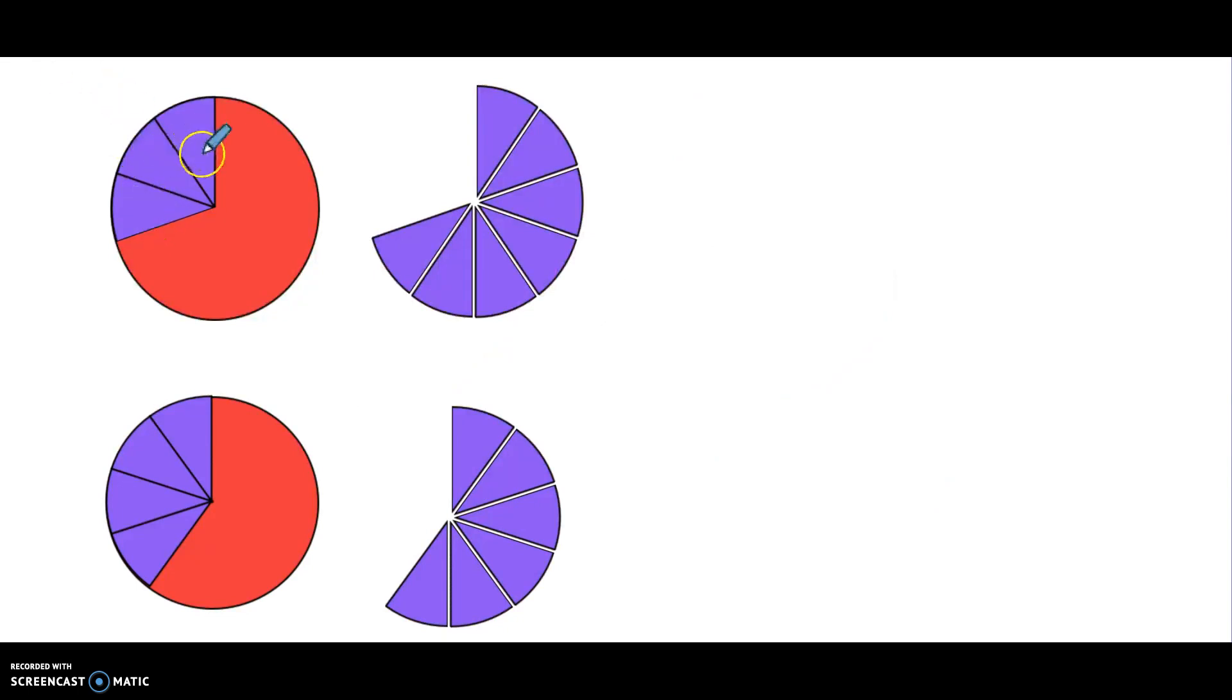So how much of my one whole is covered here? I know that I have three out of my ten equal parts covering my one whole, and this fraction reads three-tenths. Now I know that I can write it as a decimal. 0.3 also says three-tenths.